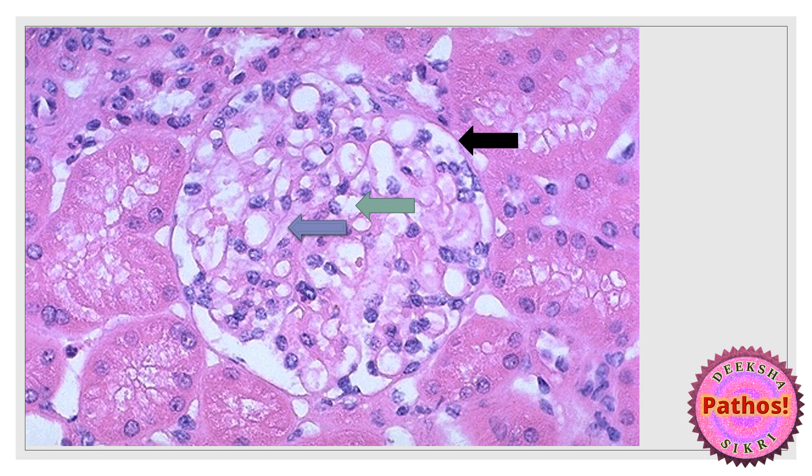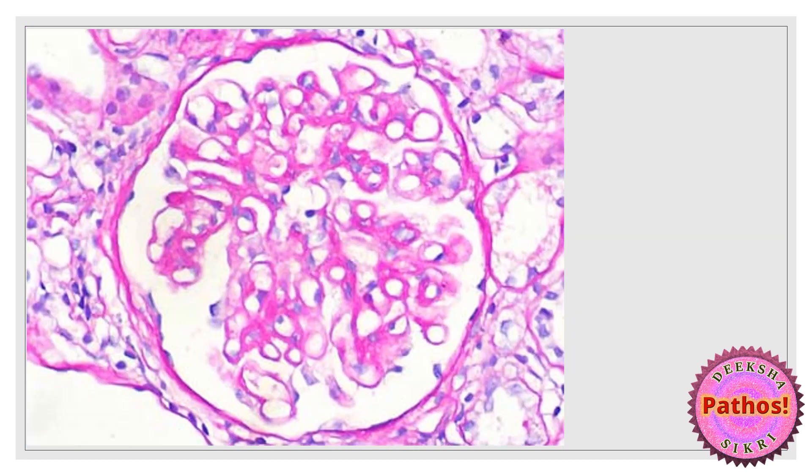On this level of microscopy I cannot see podocytes and their foot processes separately. That means if something is wrong with them — as in the very important disease called minimal change disease — the loss of foot processes is not visible on light microscopy, which is why it's called minimal change disease: hardly any change. Next photo is a PAS stain slide.